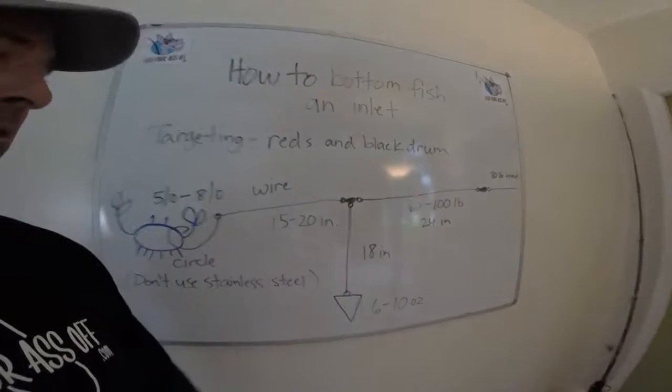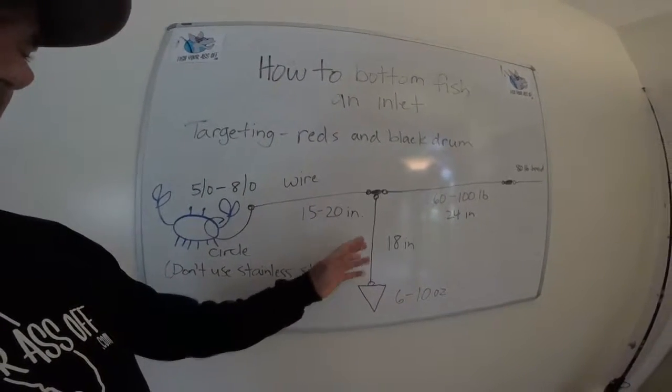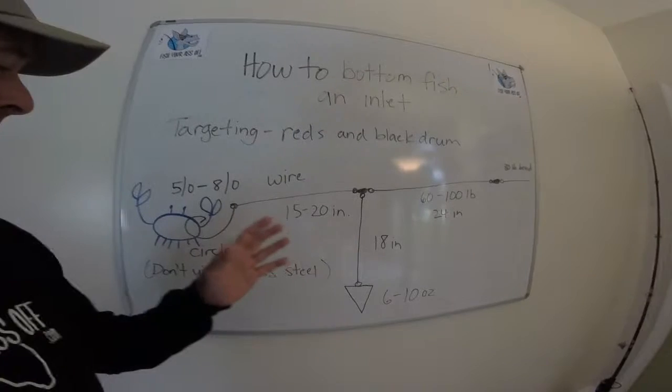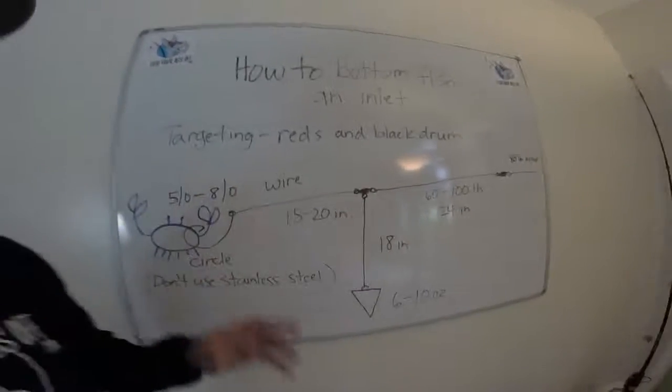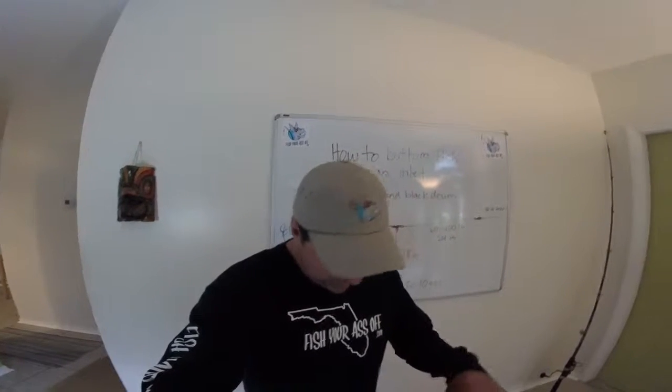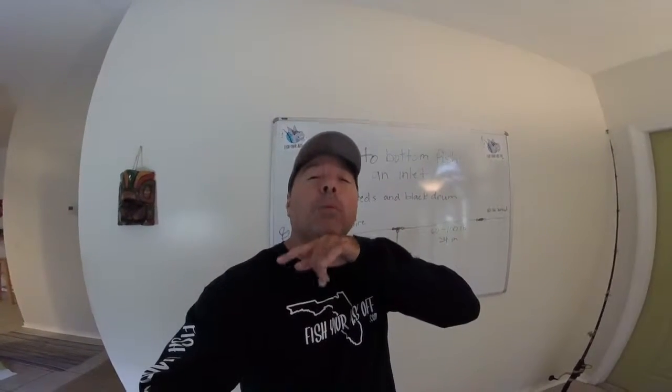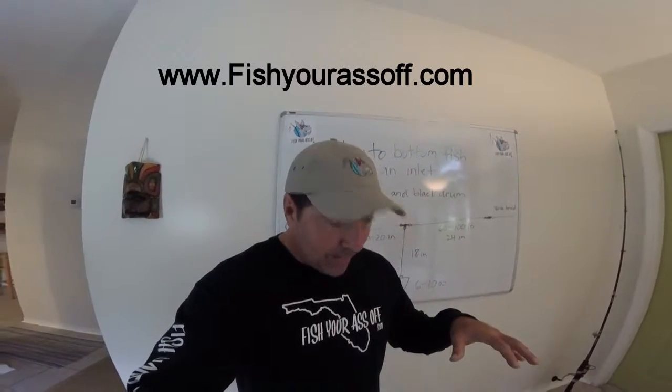But this is a great rig for keeping the bait right in that strike zone. Because remember, redfish and black drums, they're used to looking down. So they're rooting around on the ground, there's barbels the black drum do. So they're looking down a lot.